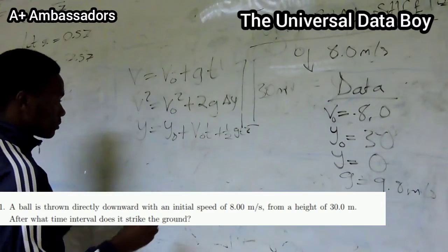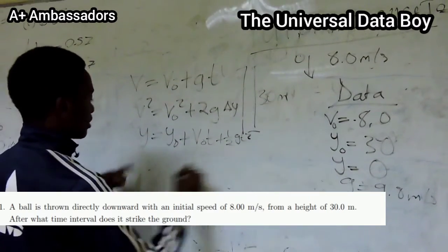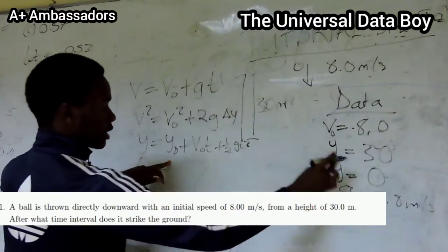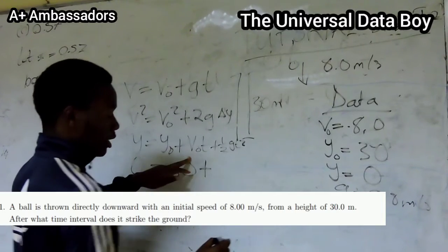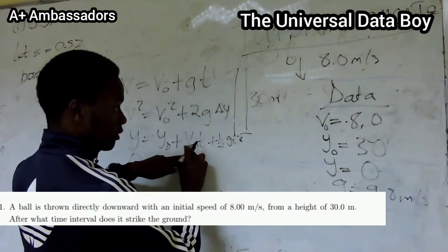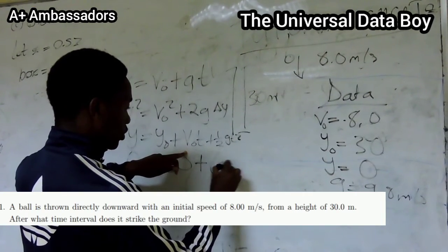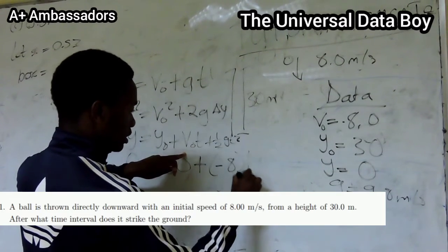Now this one, we have our Y final being equal to zero. We have our initial Y being equal to 30.